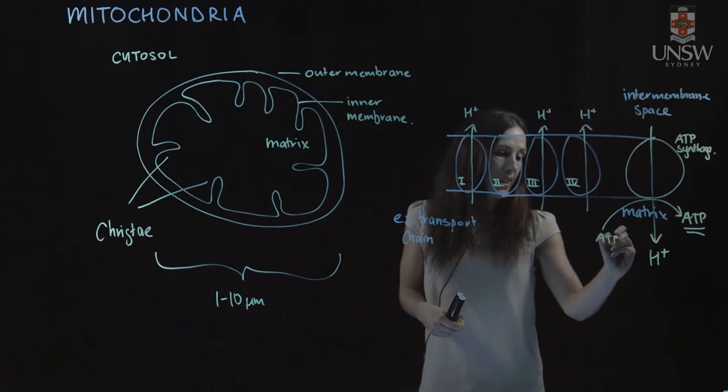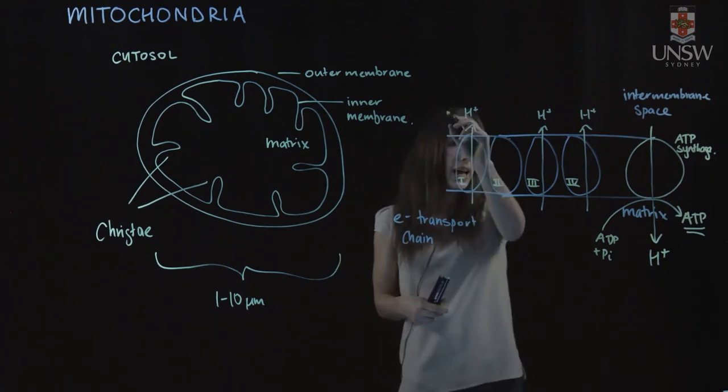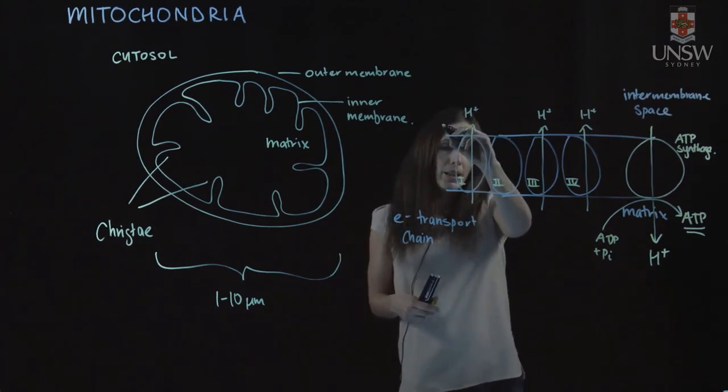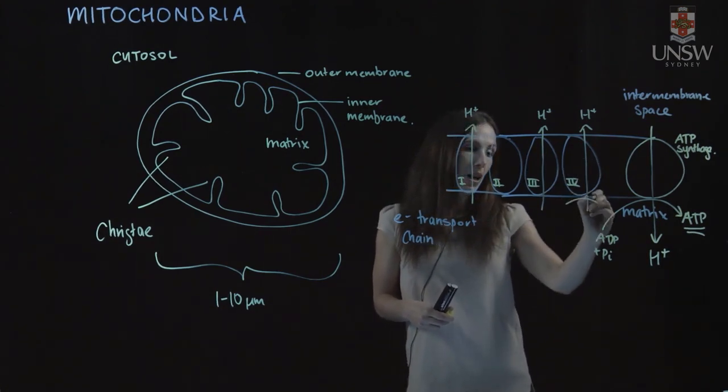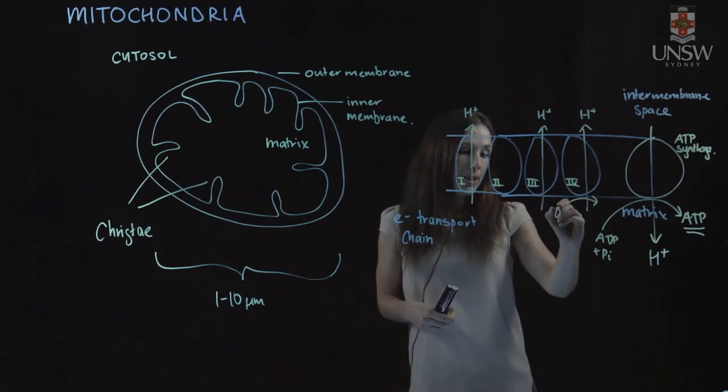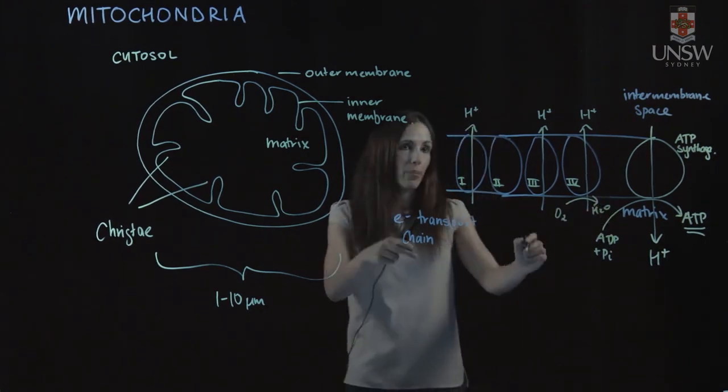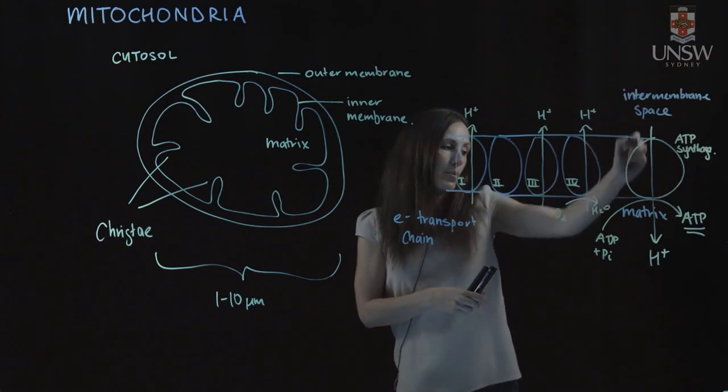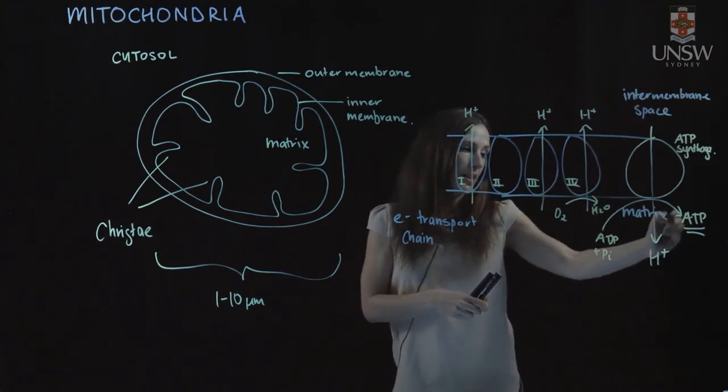And to do that, it uses ADP plus inorganic phosphate. And in our electron transport chain, electrons flow through the different complexes. Ultimately, they reduce molecular oxygen to water and they pump protons across. Those protons can come back through into the matrix, allowing us to generate ATP.